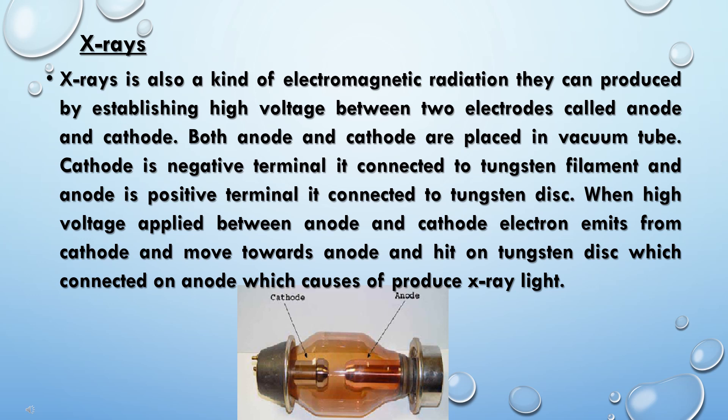When a high voltage is applied between the anode and cathode, electrons are emitted from the cathode and move towards the anode, hitting the tungsten disc connected to the anode. This causes the production of X-ray radiation.